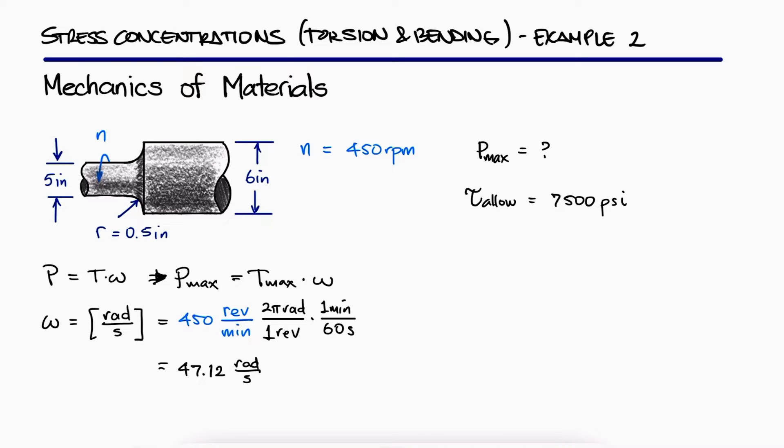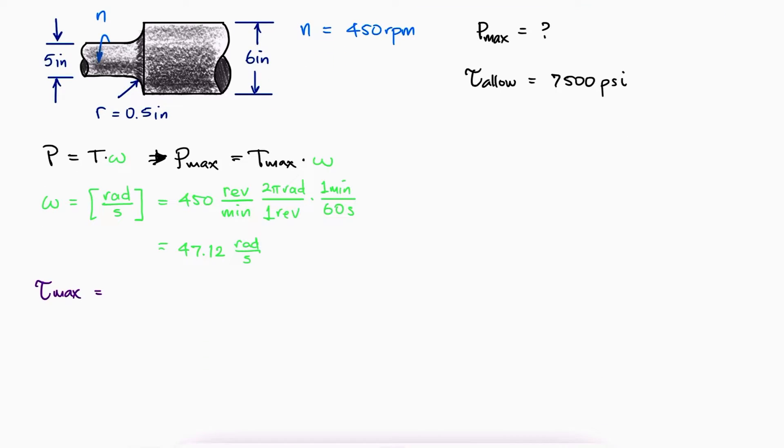To find that maximum torque, we'll use that the maximum shearing stress, which happens for a maximum torque at the stress concentration, should not exceed the given maximum allowable shearing stress.